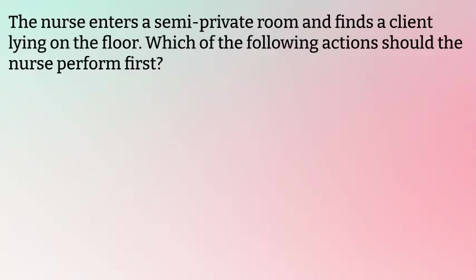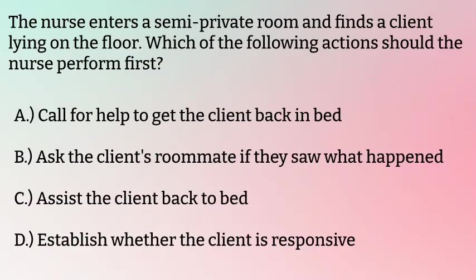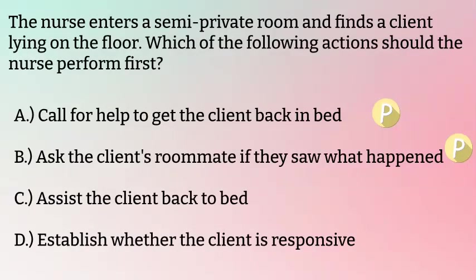Let's move on to our next question. The nurse enters a semi-private room and finds a client lying on the floor. Which of the following actions should the nurse perform first? Option A: call for help to get the client back in bed — this is clearly about safety, and as our only option it becomes our priority. Option B: ask the client's roommate if they saw what happened. This is about safety as well — the roommate's account could give us an idea of injuries and help prevent future falls. Now we have two safety options, so we'll mark them both as priority.